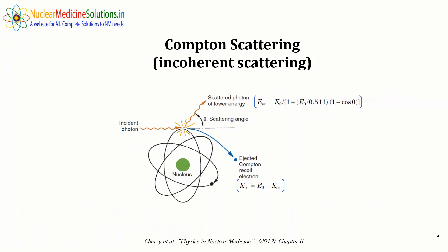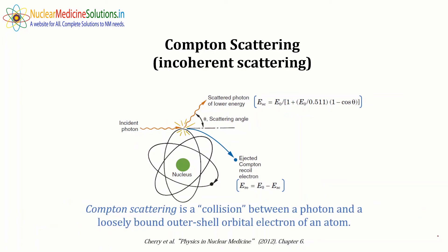Compton scattering, also called incoherent scattering, involves interaction of an incident photon with a generally outer-shell electron. Part of the energy is transferred to the orbital electron and the rest is carried away by the now-scattered photon. The electron ejected from the orbit is called the Compton recoil electron. The energy of the scattered photon is calculated by a specific formula, and the energy of the recoil electron is the difference between the energies of the incident and scattered photon.